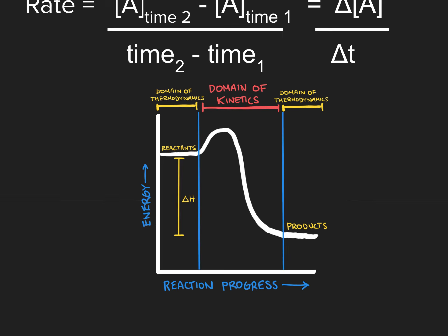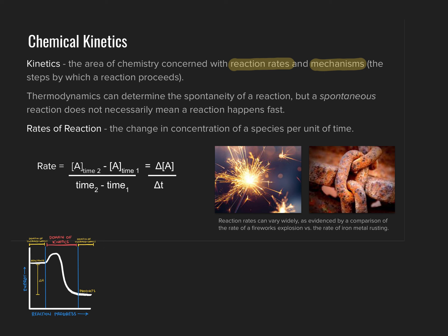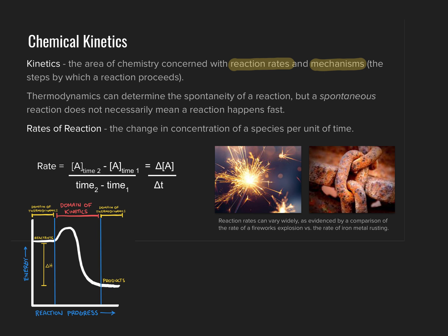If I can draw your attention to the images on our slide, I've got two images, both of which involve a reaction between a metal and oxygen. In the image on the left, we have a very rapid reaction in which magnesium burns in the presence of oxygen in a sparkler. In the image on the right, we see a very slow rate of reaction in which iron metal rusts. The thermodynamic favorability of both of these reactions is similar — both are spontaneous events. But very clearly, there is a difference in the kinetics of these reactions, and that's really what we're going to be looking at: why some reactions proceed fast versus slow.